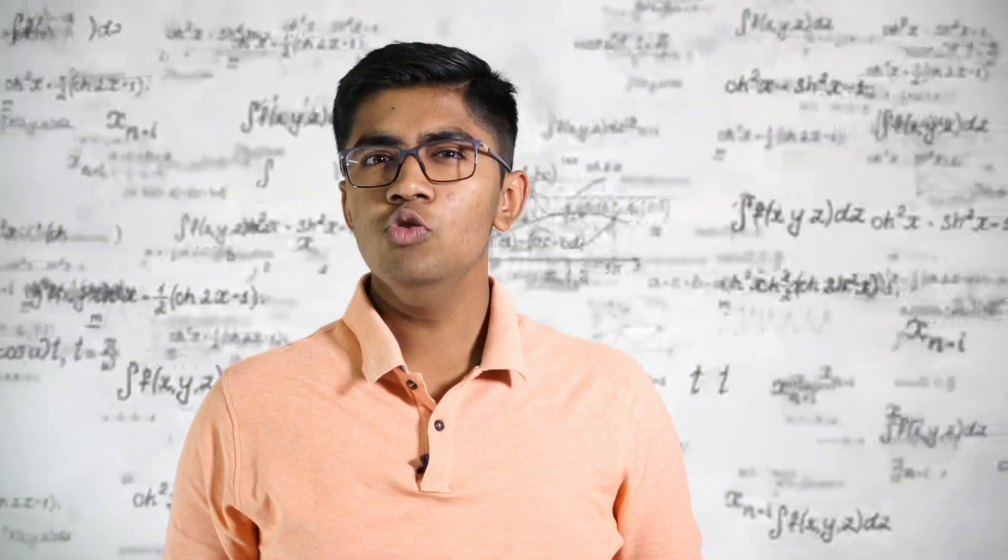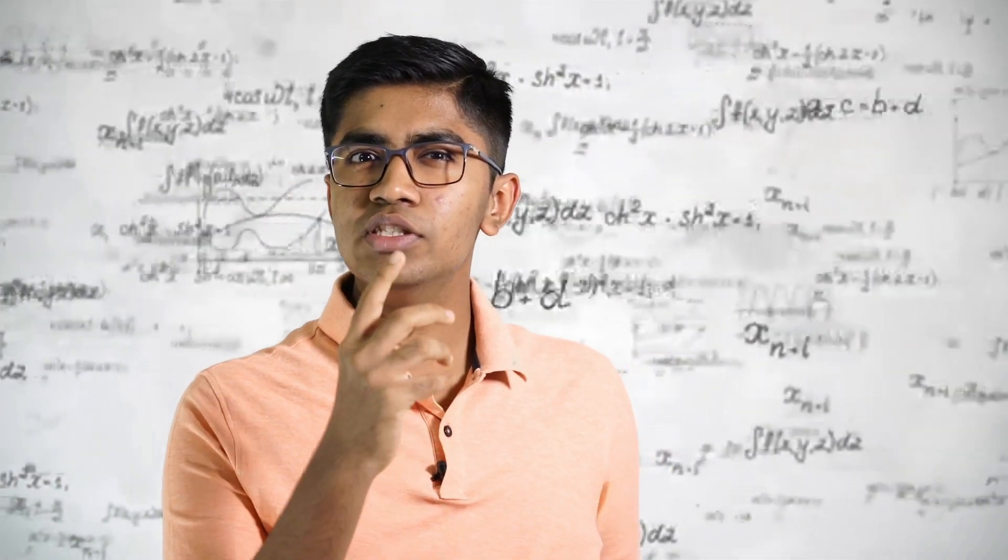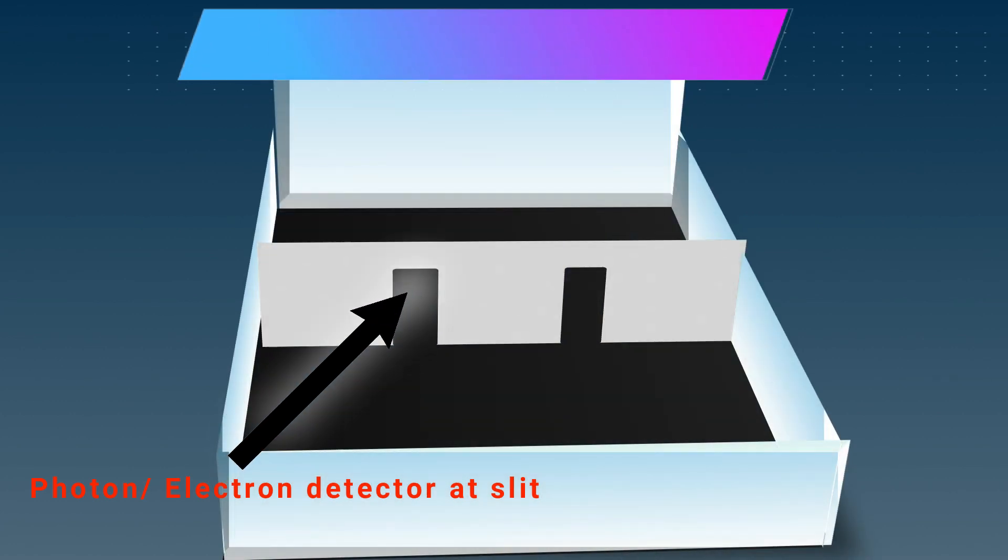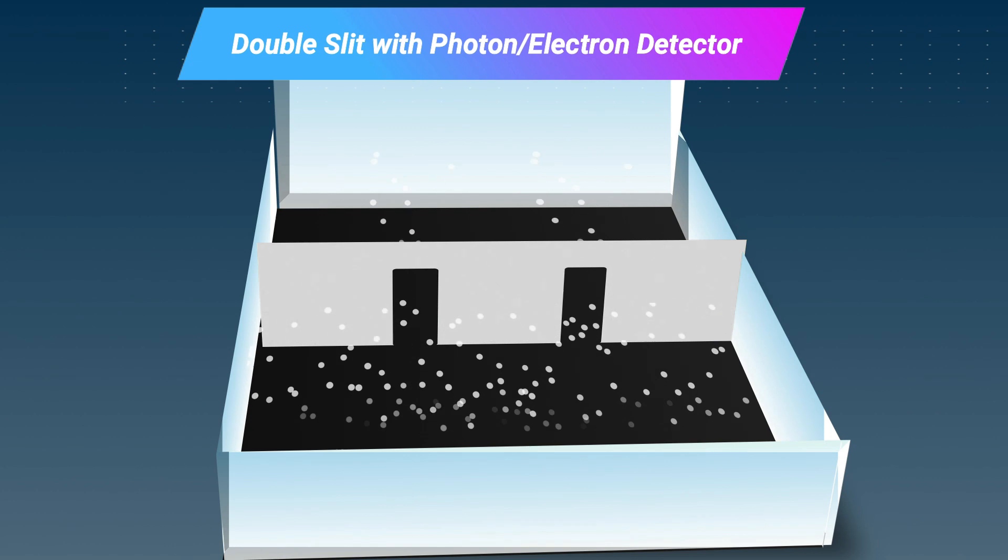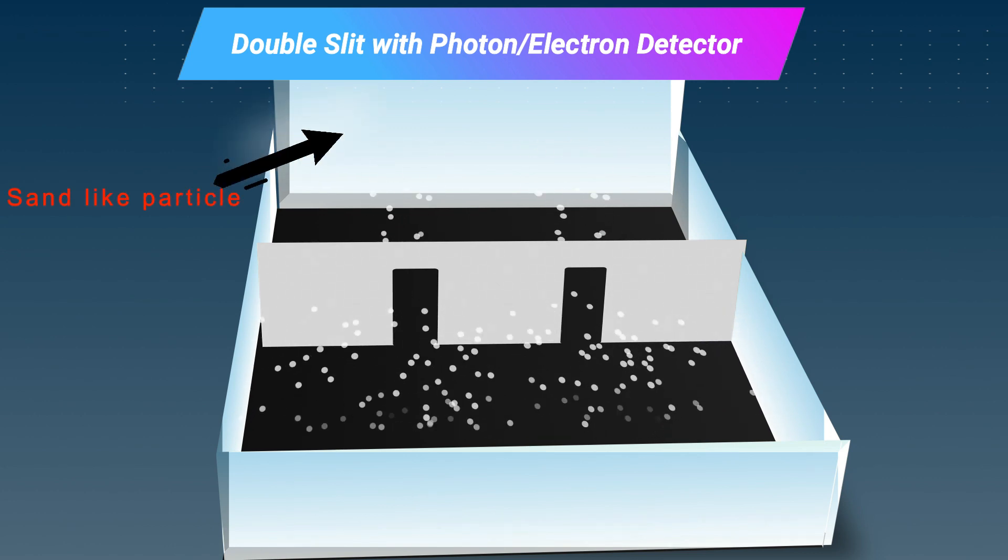Preposterous! So why not put a detector in there to see which slit the electrons are going through? This in fact gave an even weirder result. Each electron went through only one slit but now the electrons behave like particles.